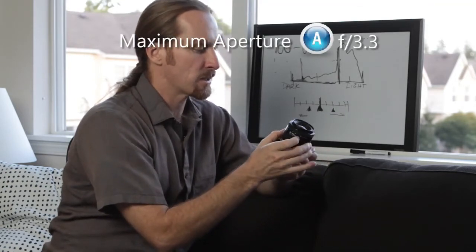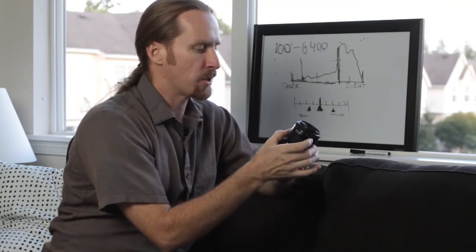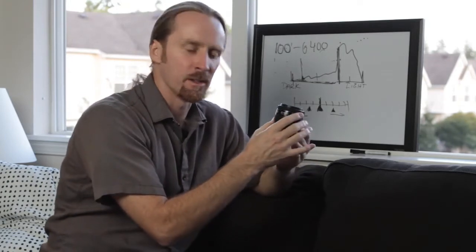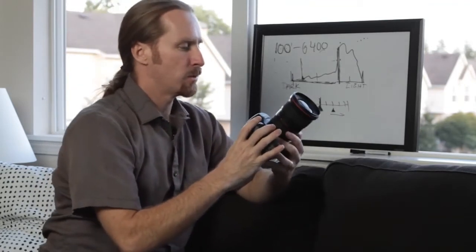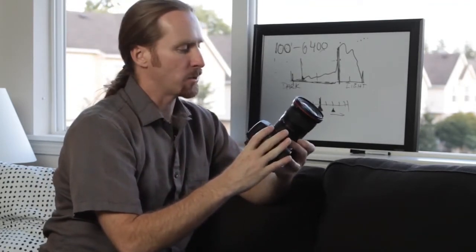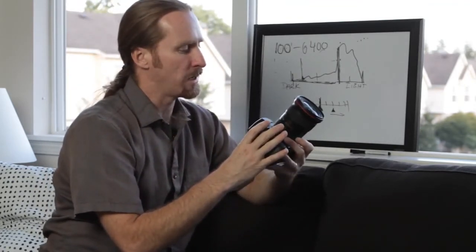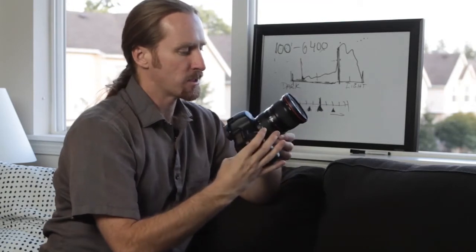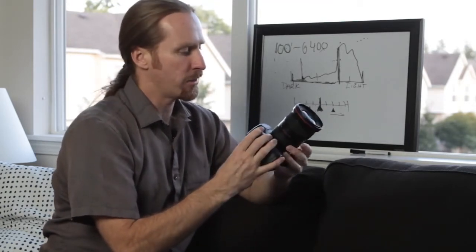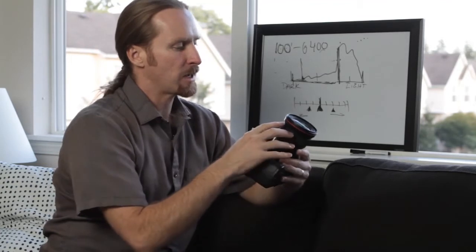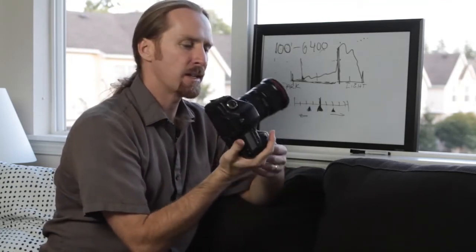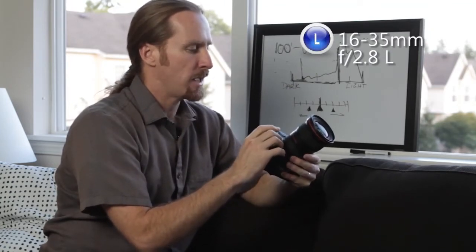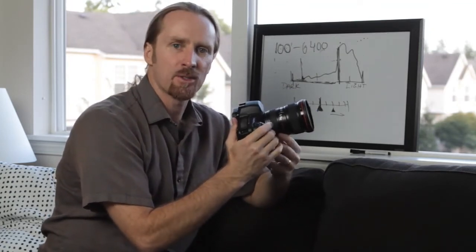So with this lens, the f-stop varies according to the zoom level. Now, you get other lenses, like the one on here, which has a fixed aperture, or fixed f-stop for the lens. So whether you're on 16 or whether you're on 35, the maximum aperture can stay at 2.8. So this lens is a 16 to 35 f2.8 lens, which means 2.8 is the widest aperture you can have.